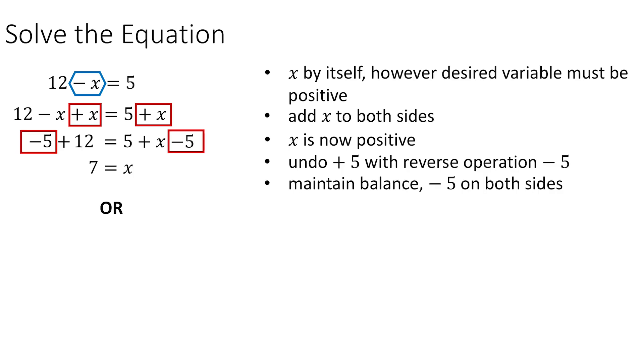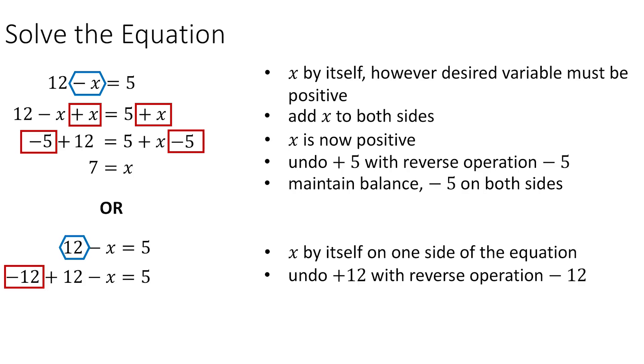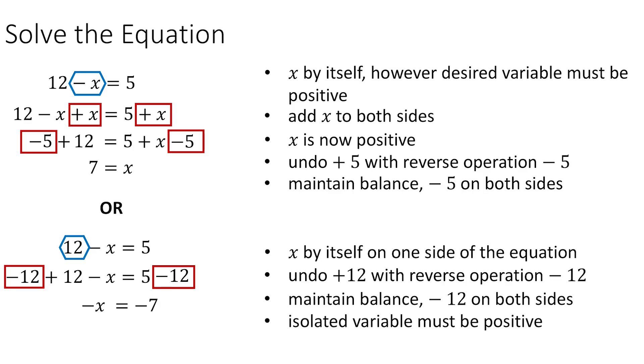The second way we can do this is to get rid of the 12 on the left-hand side and work with the negative x, and we'll cancel out the negative sign at the end. So we'll subtract 12 on both sides to get rid of the 12 on the left and move it to the right, and then we'll have that negative x is equal to negative 7.